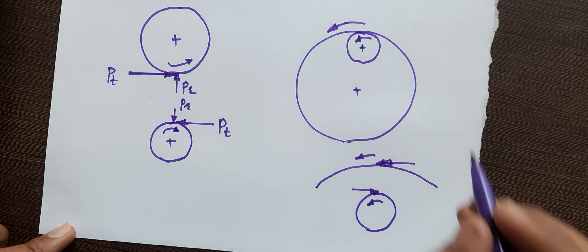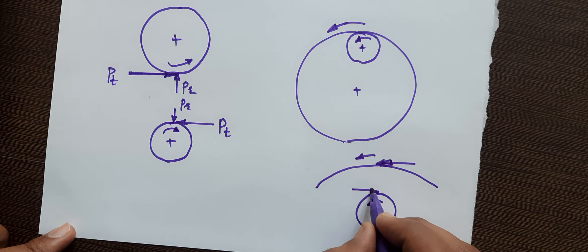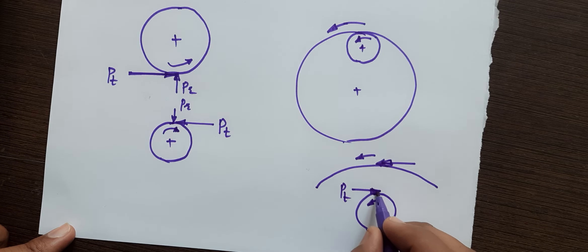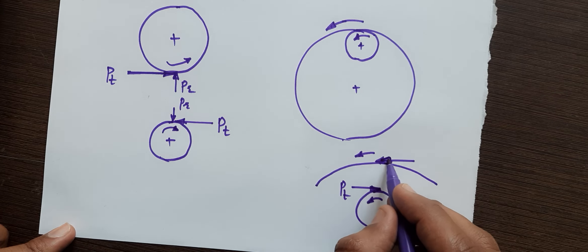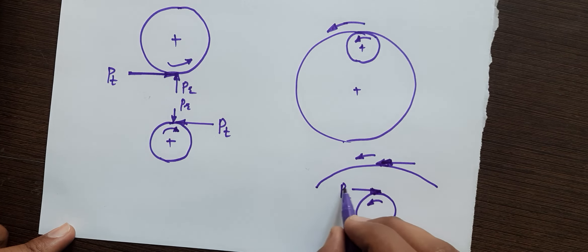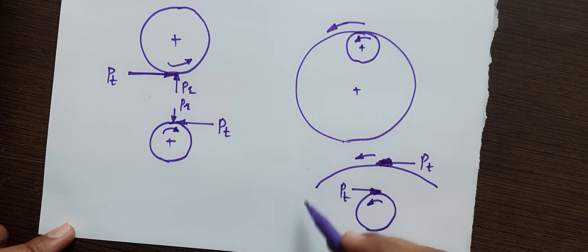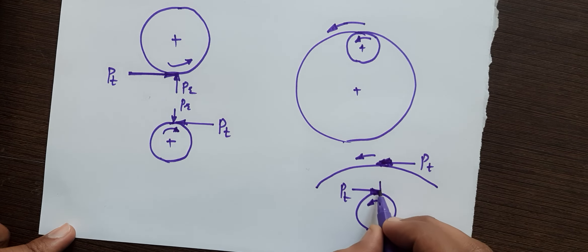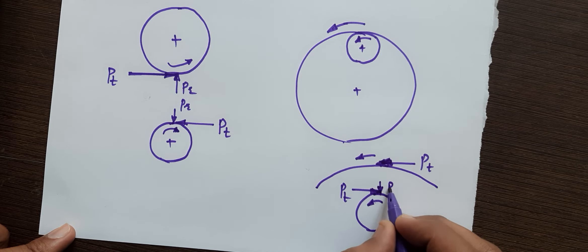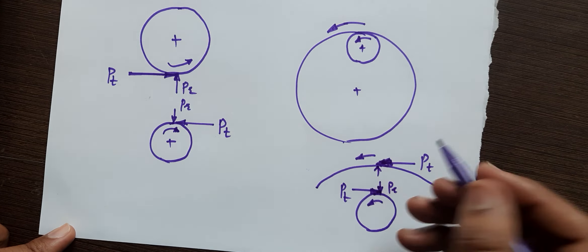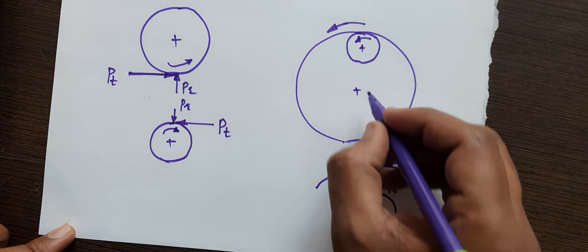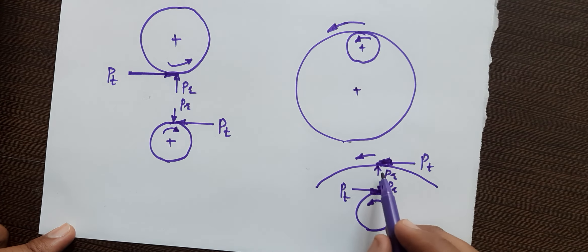In this case, the tangential force on the driving member will oppose the rotation, and the tangential component on the driven member will assist the rotation — it will act in the direction of rotation. For the radial component, on the driving pinion it acts towards the center, but on the driven gear the radial component will act away from the center.